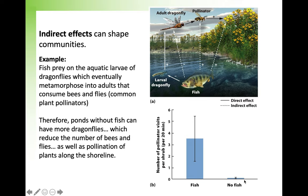Communities can be characterized by complex networks of direct and indirect interactions that can vary in both strength and direction. Indirect interactions occur when the relationship between two species is mediated by other species. Here is an example of what I mean by that.